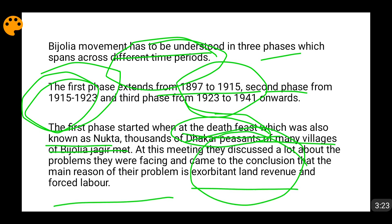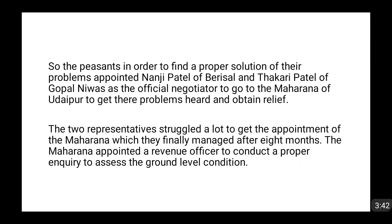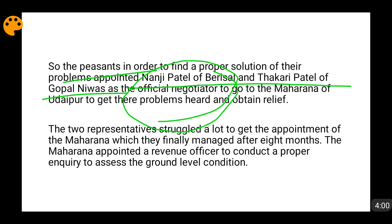They had to pay a very high amount of land revenue and were compelled to do forced labor. The Jyotedars, Jagirdars, land owners, and the British government were all compelling them to do forced labor at very minimal or absolutely no cost. These peasants at their meeting appointed two persons as their official negotiators: Nanji Patel of Berisal and Thakri Patel of Gopal Nivas. These two would go to the Maharana of Udaipur and tell him about the problems of the peasants of Bijouliya Jagir, in expectation that the Maharana would give them some relief.